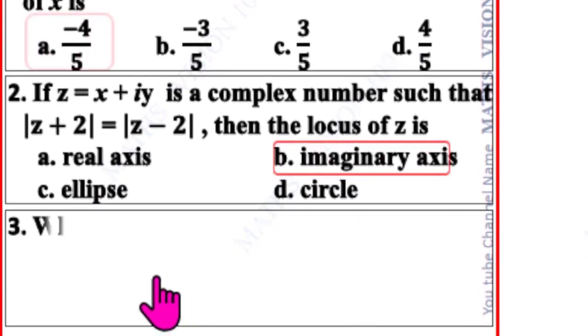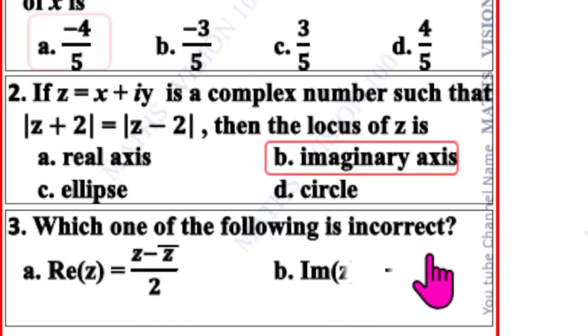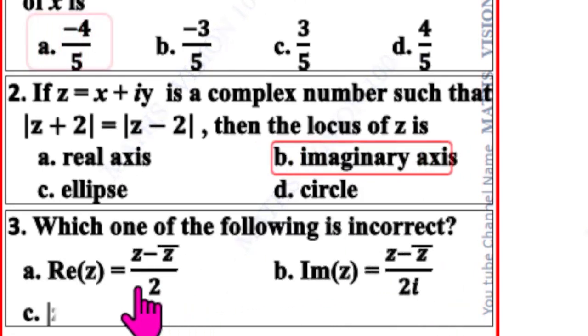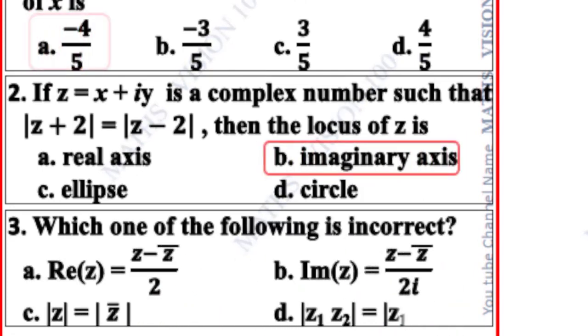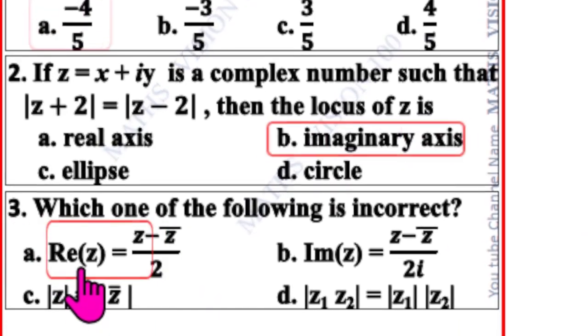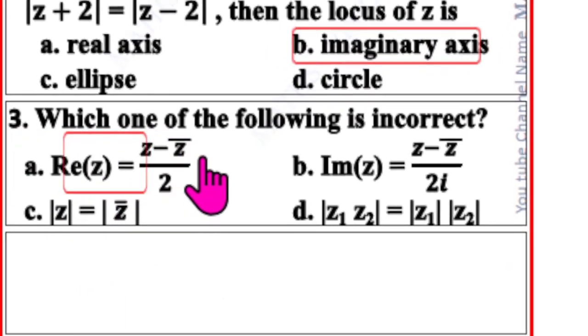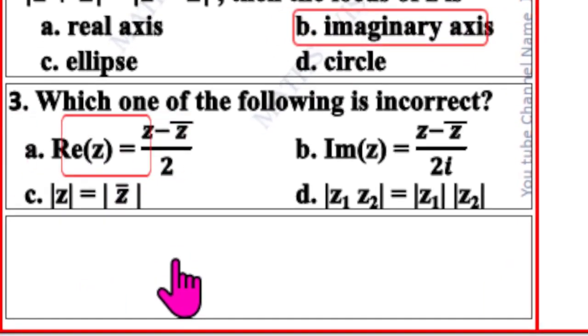Third question. Which one of the following is incorrect? Four options are given. The incorrect option is A: real part of Z is equal to Z minus Z-bar by 2.